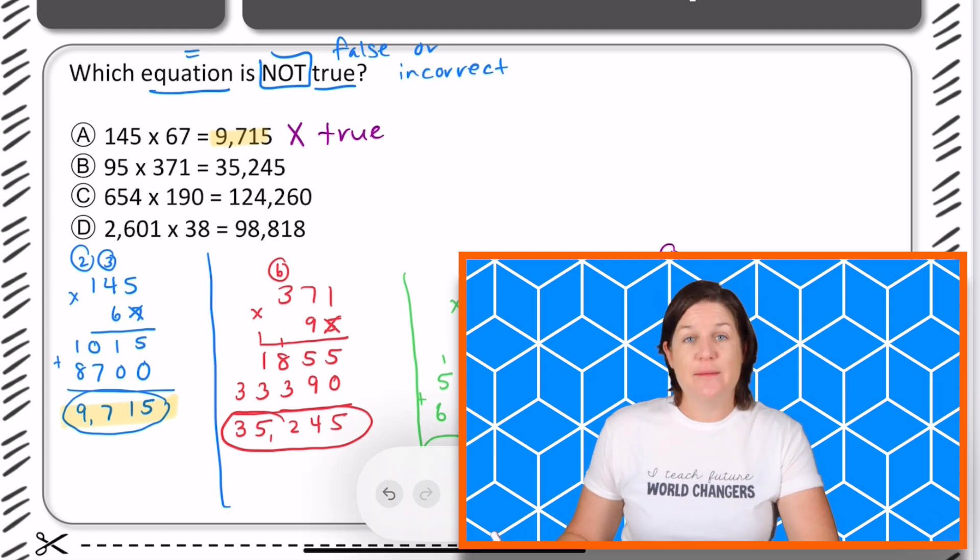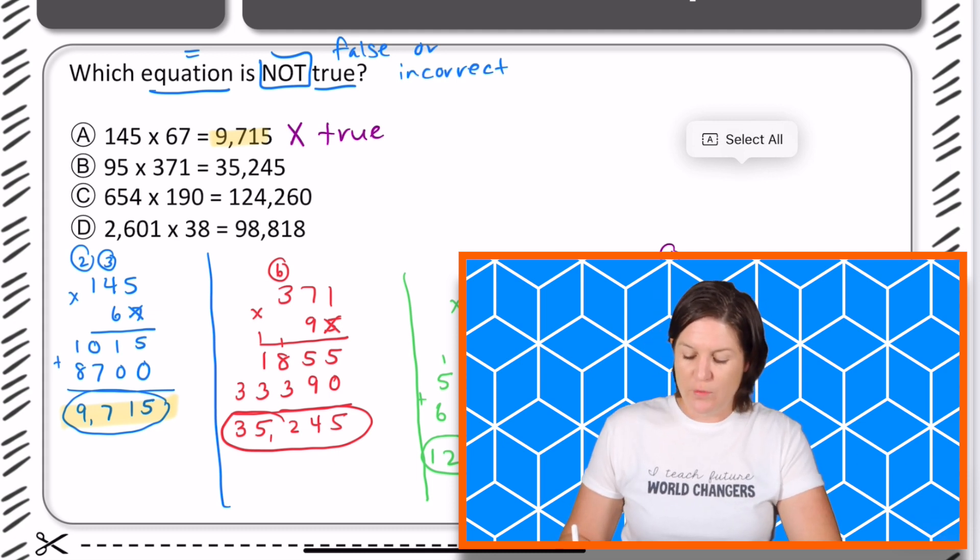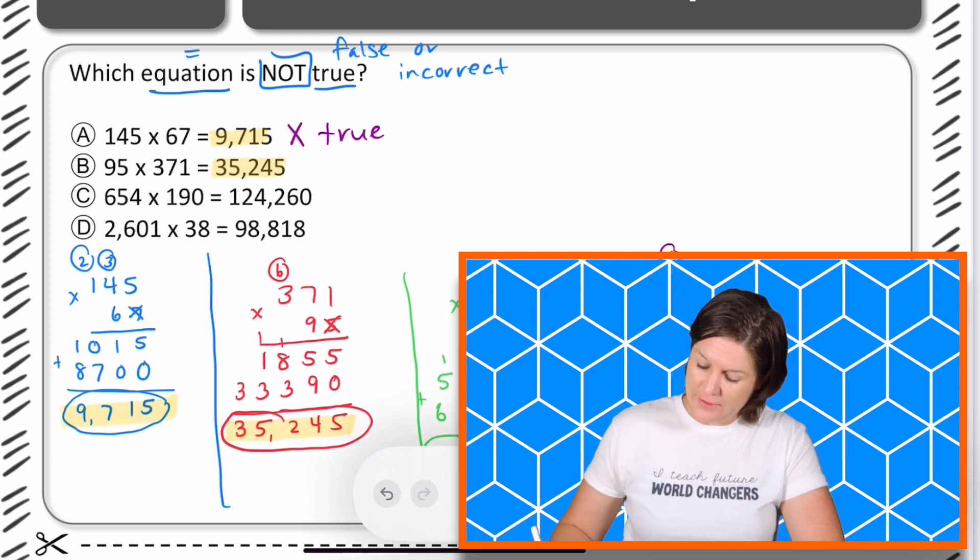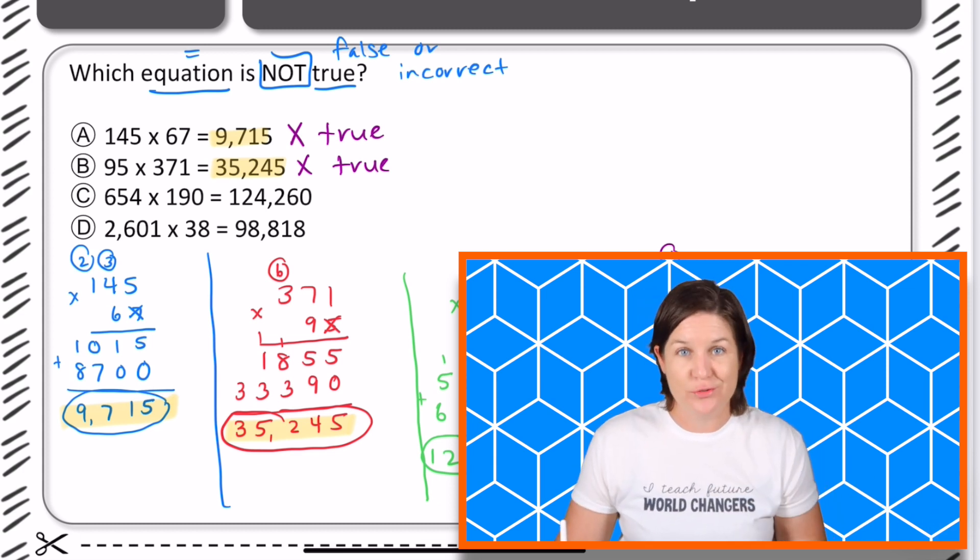Now 95 times 371. I went ahead and flipped those factors around and did 371 times 95 to get a product of 35,245. That's right there. So again we can eliminate this because this one is true and the question says which equation is not true.